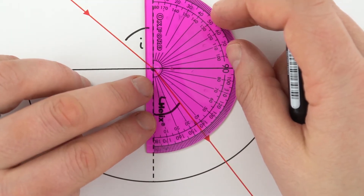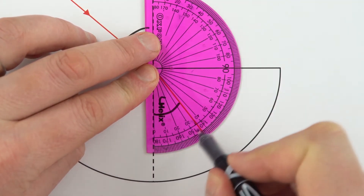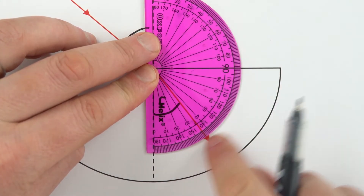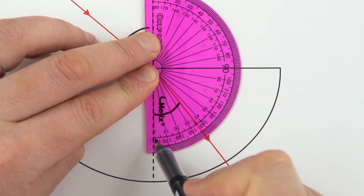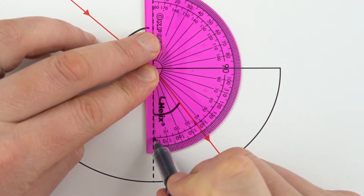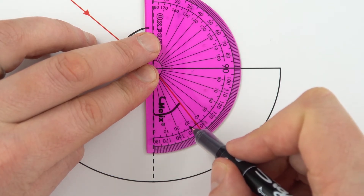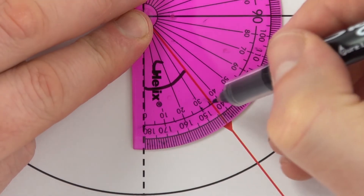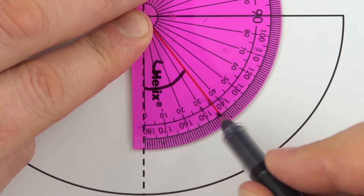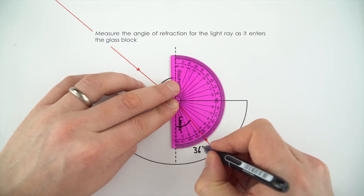Once I've done that I can then start to measure the angle. Because we're measuring the angle this way around on the protractor, I'm going to use the inner set of numbers — not the outer ones; we can see it's not about 140 degrees. So looking at the inner set of numbers: 10, 20, 30, and then this ray of light is between 30 and 40 degrees. If we look very carefully it's six graduations, so this angle here is equal to 36 degrees.